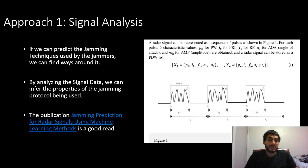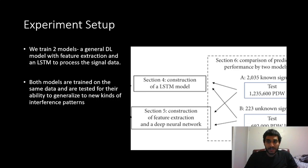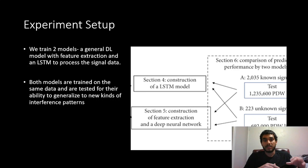A publication called 'Jamming Prediction for Radar Signals Using Machine Learning Methods' found that we can use these signals to classify different jamming techniques. Once we can classify them, we can start predicting how they're blocking us and how to get around it. Their experiment tested two protocols: one was general deep learning with feature extraction, and the other was an LSTM directly fed the signal data. They were trained on the same data and tested on their ability to generalize to new interference patterns — trained on patterns A through F, then tested on pattern G onwards.